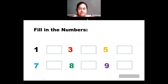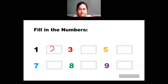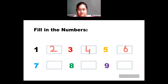Now you have to fill in the missing numbers. 1 is there, then 3 is there — what comes after 1? We have 2 after 1. Then after 3, before 5, we have 4. So 1, 2, 3, 4, 5. After 5 you have 6. So you write 6 like this.